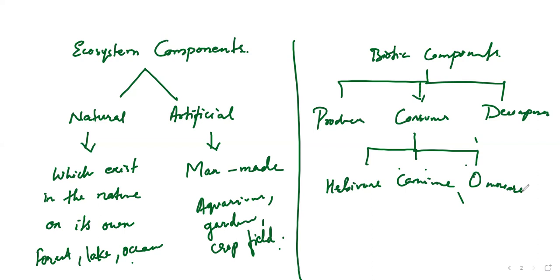Consumers means they will directly depend upon the producers. Whereas decomposers means those which will decompose or decay particular products for survival. These are the three categories.